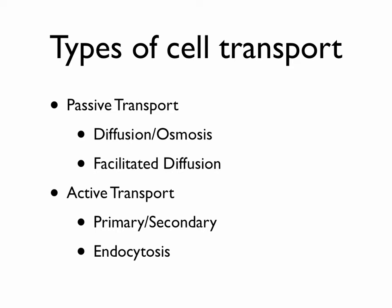There are three types of active transport: primary and secondary active transport, which use small channels in the cell membrane for small particles, and then endocytosis, which is for bringing in larger amounts of material.